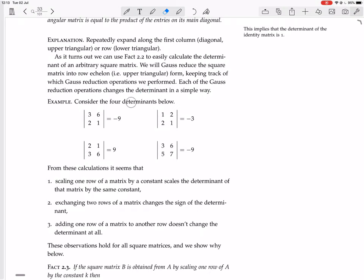Consider the four determinants below. So we have the 2 by 2 matrix 3, 6, 2, 1, and the determinant is 3 minus 12, so minus 9.